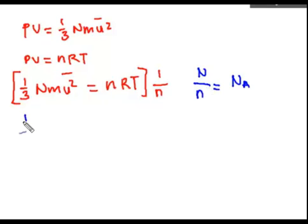From here, we'll get one-third Avogadro's number, mass, U squared, equal to RT.